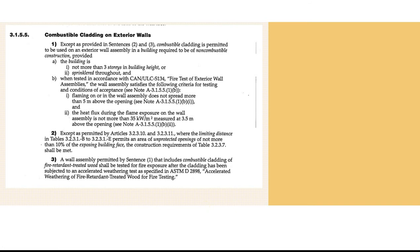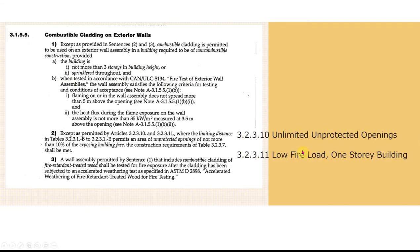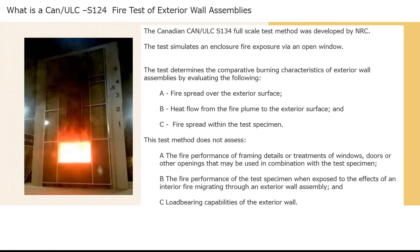Section 3155 addresses combustible cladding on exterior walls. It must be not more than three stories or sprinklered throughout, and tested to CAN ULC S134. The S134 test was developed by NRC and assesses fire spread by spraying fire over the flame flow and fire plume up the wall assembly. Note there was a correction: the intumescent coating reference should have been S124, while the wall assembly test is S134.